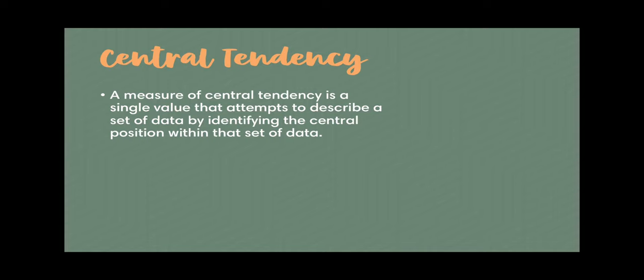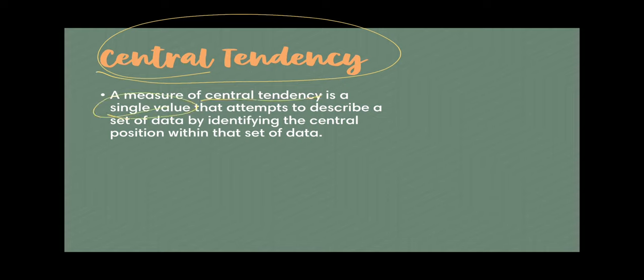A better way of presenting where your data converges is through central tendency. A measure of central tendency is a single value — the goal is to point us to a single value that attempts to describe a set of data by identifying the central position within that set of data. In which data point does the data set converge? For example, if we're describing one set of people using blood pressure, what is their central blood pressure, or where does their age converge? That's your central tendency.